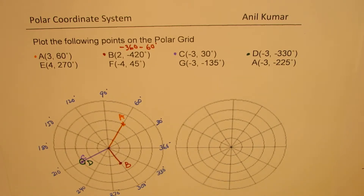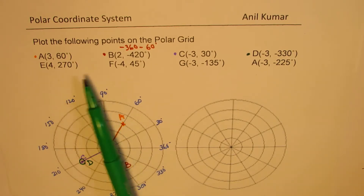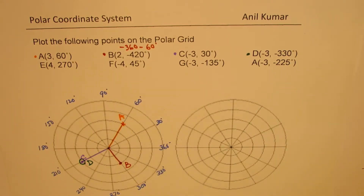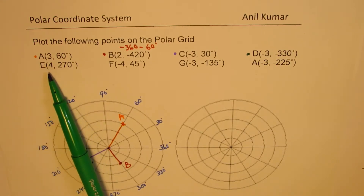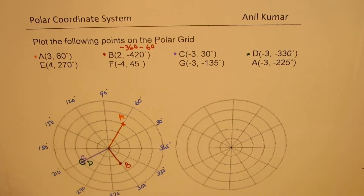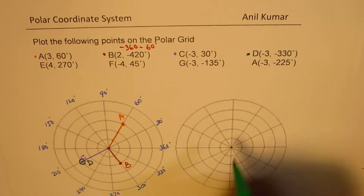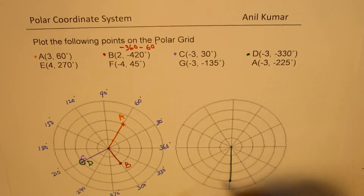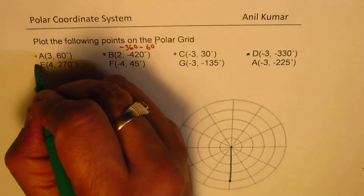I'd like you to pause the video and plot these yourself, then check with my solution — that'd be better. So now that you've understood the concept, we're going for point E, which is (4, 270°). 270 degrees is right there, and four units — 1, 2, 3, 4 — so that's point E.